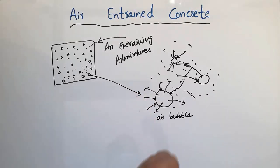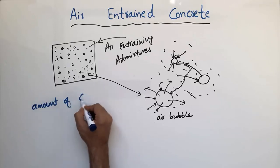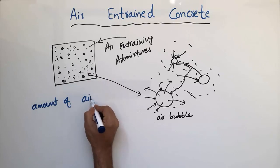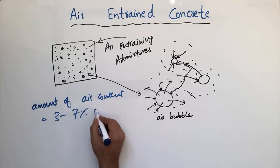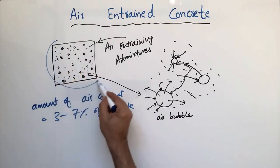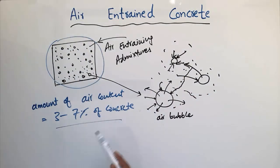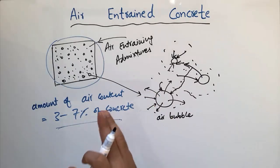The amount of air content is typically three to seven percent of the concrete volume. If this is 100 percent concrete, it will have three to seven percent air as the general dosage of air content inside air entrained concrete.